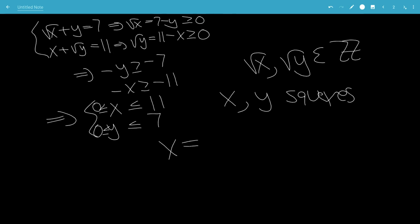So in this case, x has to be between 0, 1, 4, and 9. And y has to be between 0, 1, just 4, because it goes up to 7.